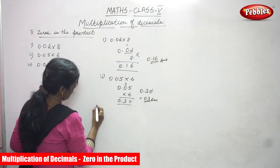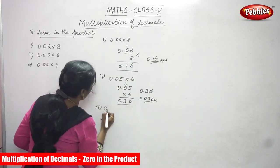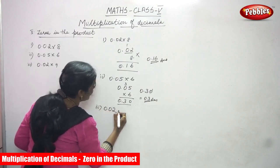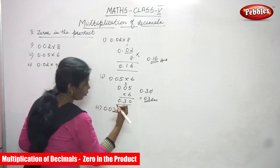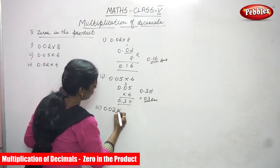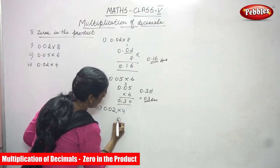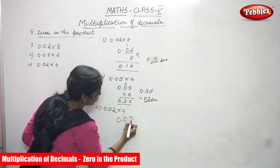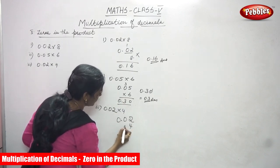Next question. Third question. 0.02—sorry—multiplication. Into 4. So 0.024 into 4.